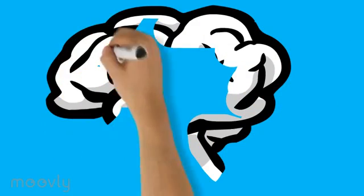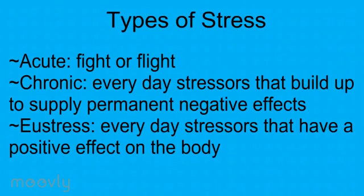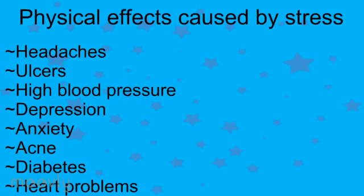Now let's move on to the not-so-chemistry part of this video. The three types of stress are acute, chronic, and distress. Pause the screen to read the definitions if needed.